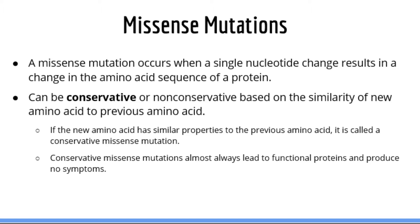Sickle cell disease is the prototypical disease when talking about missense mutations because a single nucleotide change results in the exchange of glutamic acid to a valine. In the case of sickle cell, this would be a non-conservative mutation because glutamic acid and valine have different chemical properties. The resulting protein, in this case the beta globin protein, does not function and this results in the disease sickle cell anemia.